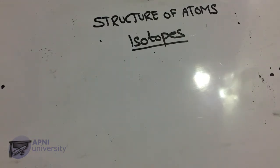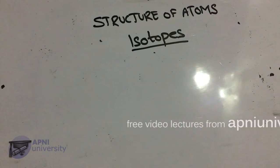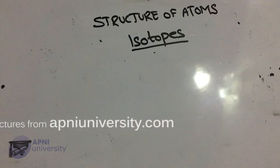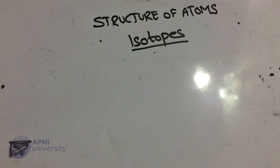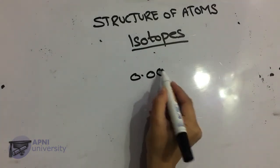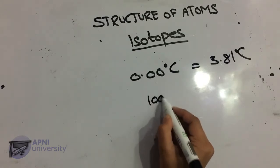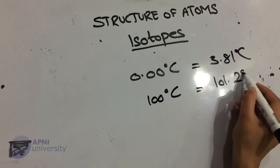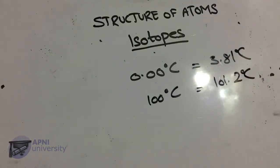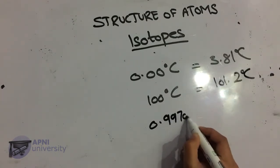Water that contains hydrogen-2 atoms in place of hydrogen-1 is called heavy water. Next, we have a comparison of ordinary water and heavy water — comparing properties such as melting point and density.